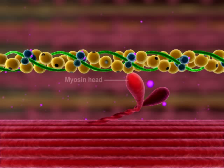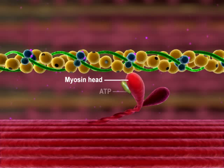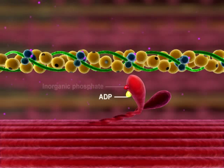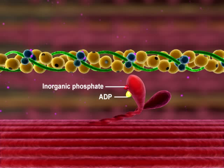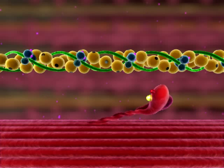The myosin head must be activated before a crossbridge cycle can begin. This occurs when ATP binds to the myosin head and is hydrolyzed to ADP and inorganic phosphate. The energy liberated from the hydrolysis of ATP activates the myosin head, forcing it into the cocked position.